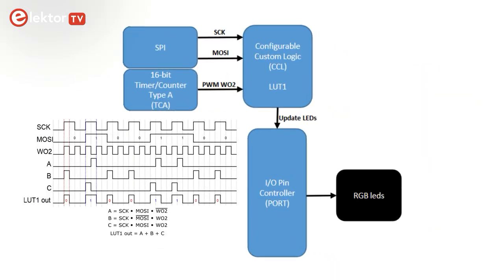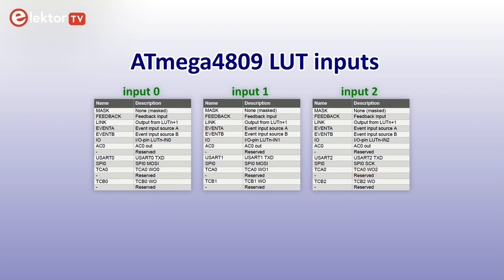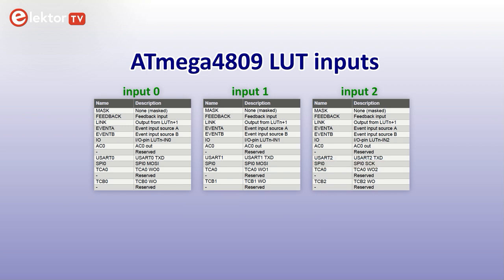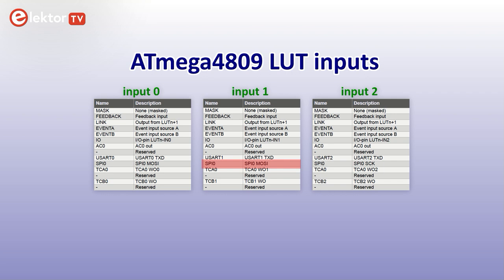On the ATtiny1617, the clever NeoPixel stuff is done with SPI, timer TCA0 and a LUT. These peripherals all exist on the ATmega4809, except that the LUTs have different input signals. The ATtiny example uses TCA0's channel 2, WO2. On the 4809 this signal can only be routed to a LUT's input number 2, which is also the only LUT input that accepts the SPI SCK signal. As we need SCK, we must switch to another timer channel. Luckily, the other two LUT inputs allow for WO0 and WO1, so we have two options. We also need the SPI's MOSI signal, which can be routed to either input 0 or input 1 of a LUT. I chose LUT input 1 for MOSI, leaving me with TCA0 channel WO0 on LUT input 0. Had I put MOSI on LUT input 0, then I should have used TCA0 channel WO1 instead.